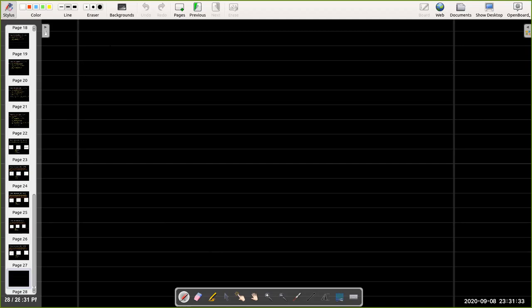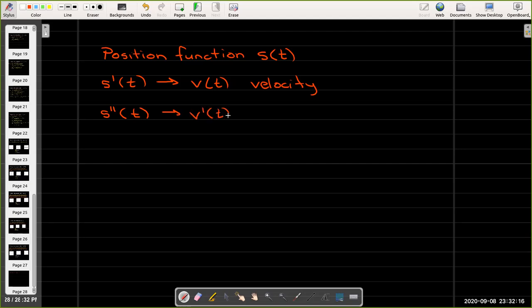When we're talking about the position function s(t), we saw that the first derivative gives us the velocity v(t). The second derivative, which is the rate of change of velocity with respect to time, is what we call the acceleration a(t).